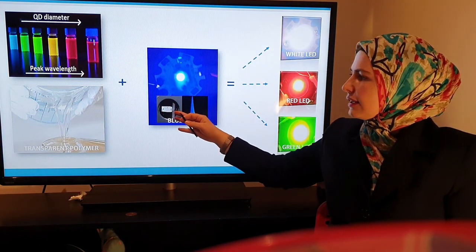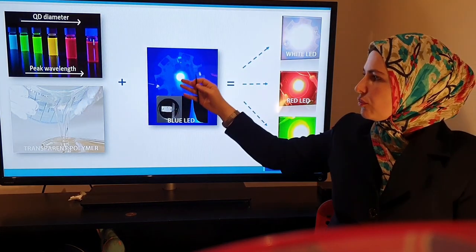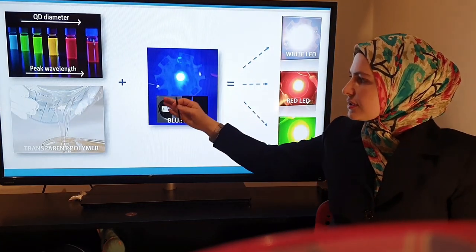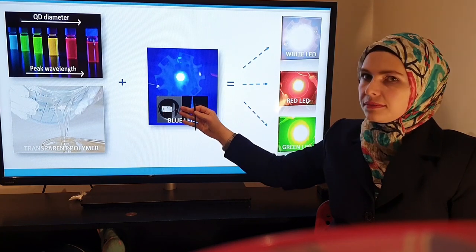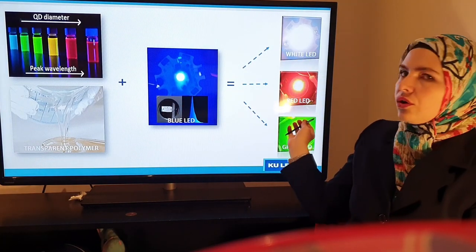The center of the LED package is a diode, which in this case emits blue light. Depending on the composition and concentrations of the quantum dots here on the blue LED package, finally we can get white, red or green LED.